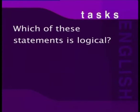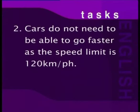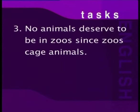Now you've seen logic and you've seen what fallacies are. We've seen where we make mistakes and we've seen how to construct good argument. Now I want you to look and decide whether you can recognize the logic and the fallacy on your own. Here's your task for today — which of these statements is logical? The first one: I will be a lawyer because there are two other lawyers in my family. The second option: cars do not need to be able to go faster as the speed limit is 120 kilometers an hour.